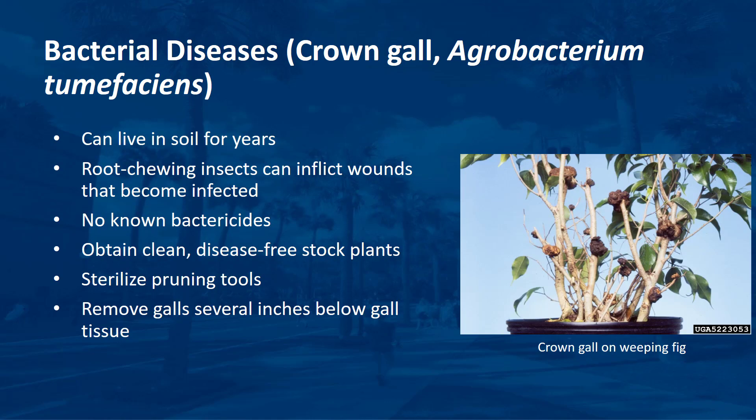Agrobacterium can live in the soil without a host for a number of years, so avoid contact with unsterilized native soil. Root-treating insects can inflict wounds that can become infected. No known bactericides are effective against crown gall; a strict sanitation program is the best method of disease management. Obtain clean, disease-free stock plants. During pruning, cutting utensils should be sterilized between each cut, and cuts should be made several inches below the gall tissue.